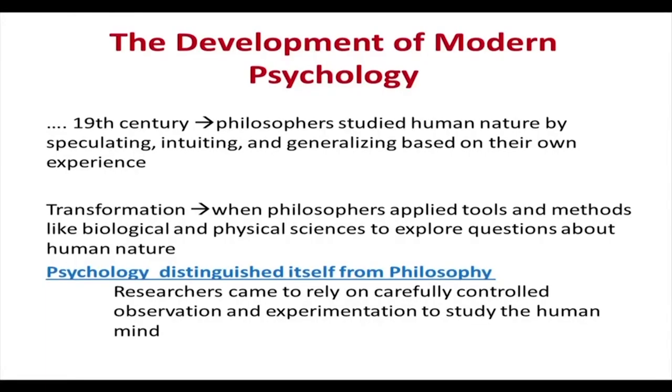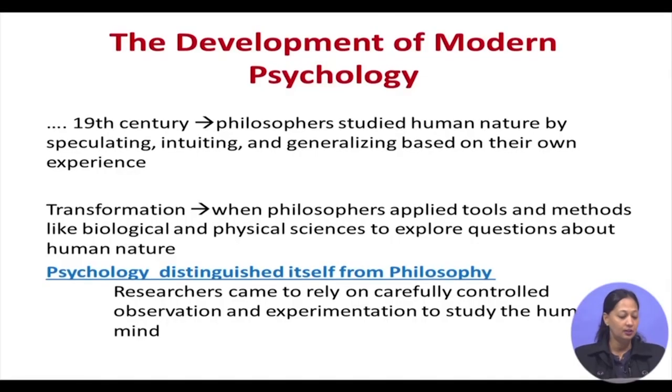We can say that psychology is one of the oldest disciplines as well as one of the newest sciences. During the nineteenth century, philosophers started studying human nature by speculating, intuiting, and generalizing based on their own experience. This transformation came about primarily when philosophers started using different tools and methods already being used in the biological and physical sciences to explore questions related to human nature. In this way, psychology distinguished itself from philosophy, as researchers came to rely more on carefully controlled observation and experimentation.